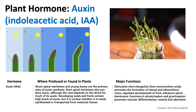Auxin is a plant hormone which promotes growth. Auxin is produced at the tips — either at the shoot apical meristem or the root apical meristem — but it is primarily found at the shoot apical meristem, which is the tip of the plant. That means if we cut off the tip of the plant, that plant would no longer have auxin, because auxin is produced at the shoot apical meristem.